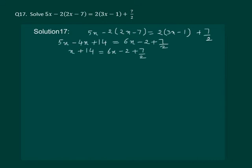Next, let us bring like terms together. So, we get x minus 6x equal to minus 2 plus 7 by 2 minus 14.